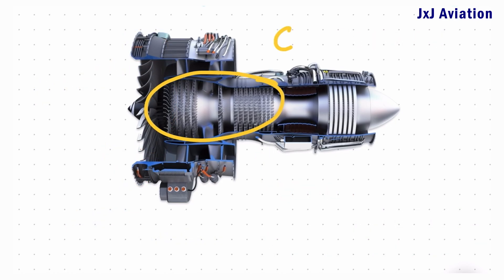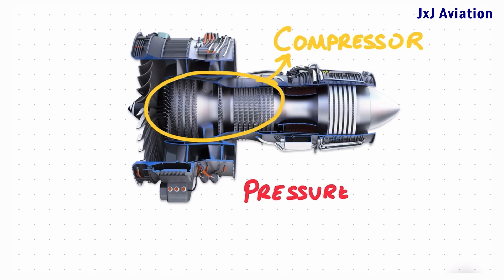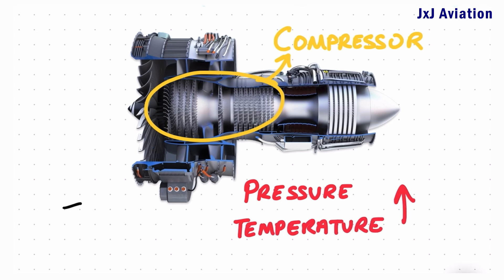The air now enters the compressor section of the engine. Here, the pressure and temperature of the air increase. This is also an isentropic process.